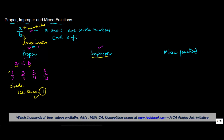Let us talk about improper fractions. In improper fractions, the value of A is greater than or equal to B. So the numerator is always either greater than or equal to the denominator.